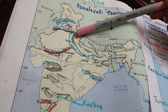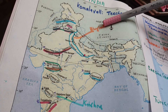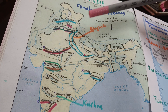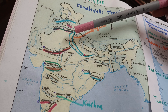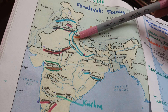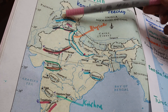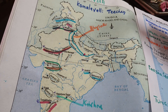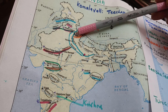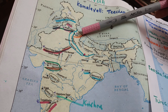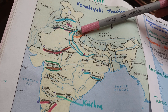Then moving a little further, that is Tehri Dam, which is on the Bhagirathi river, and it is in Uttarakhand. So we have three dams so far: Jammu Kashmir, Himachal Pradesh, and Uttarakhand.